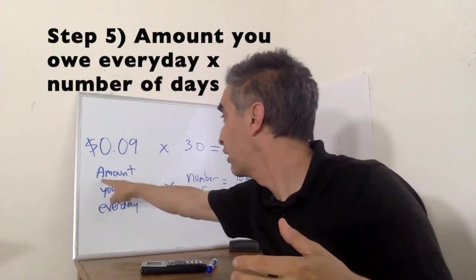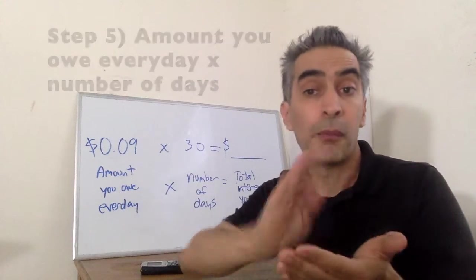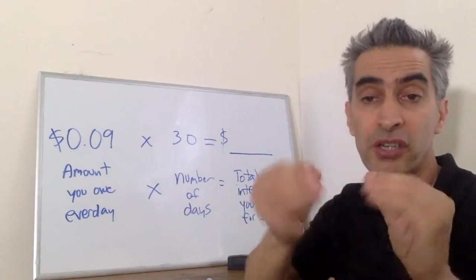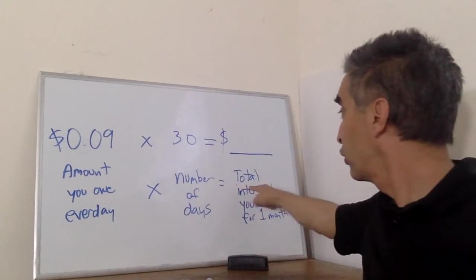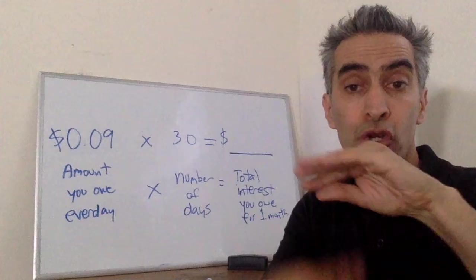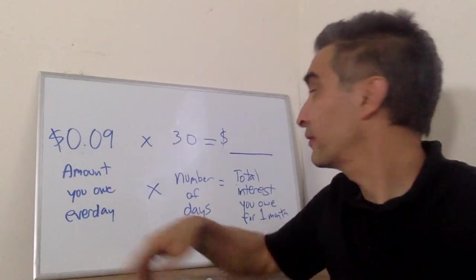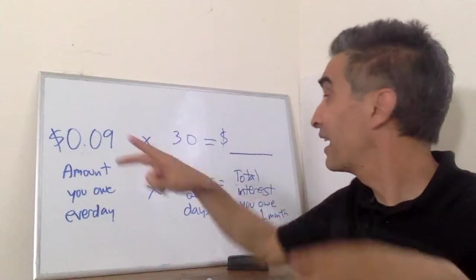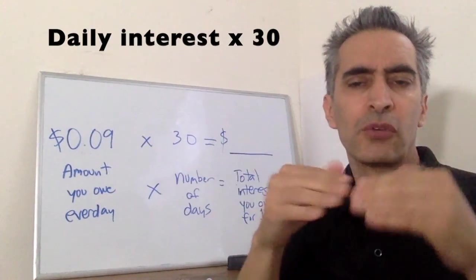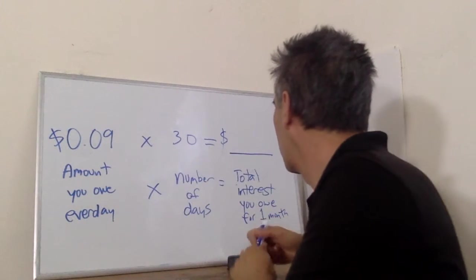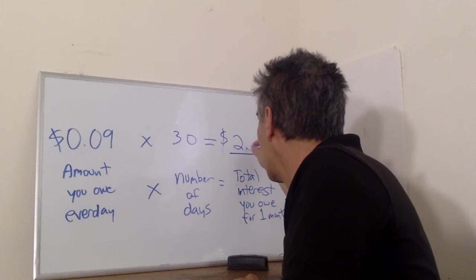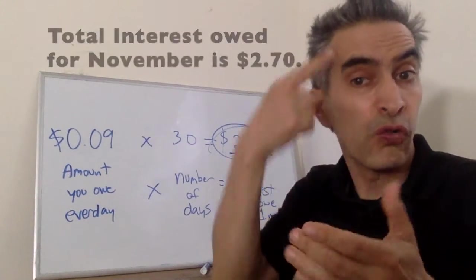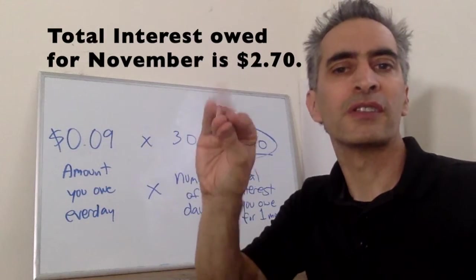Step 5: the amount you owe every day times the number of days equals the total interest you owe for one month. Nine cents times 30 equals $2.70. So the total interest owed for the month of November is $2.70.